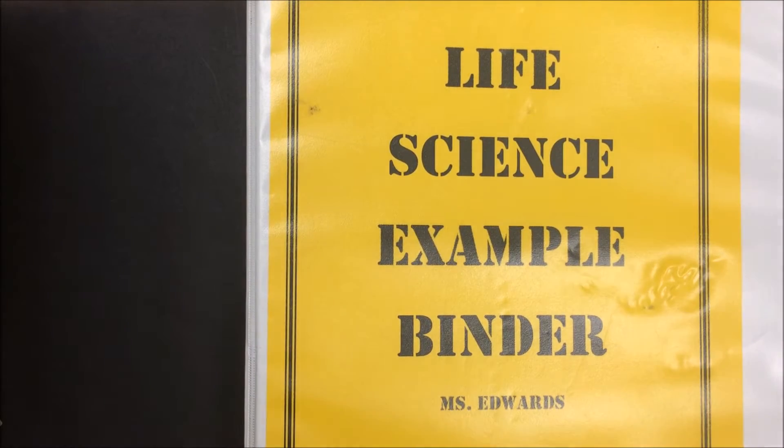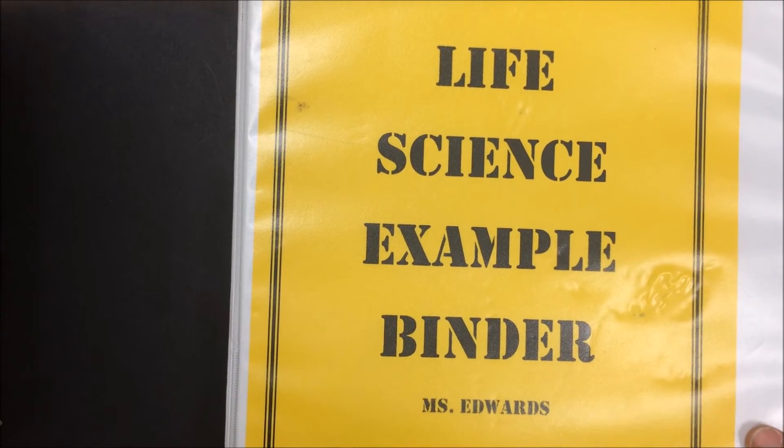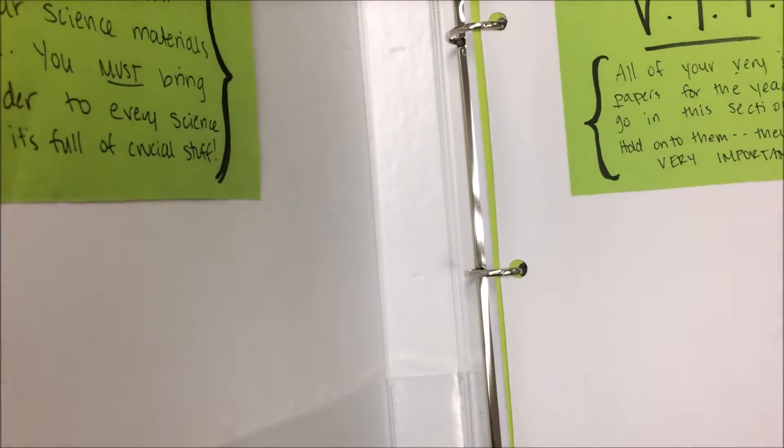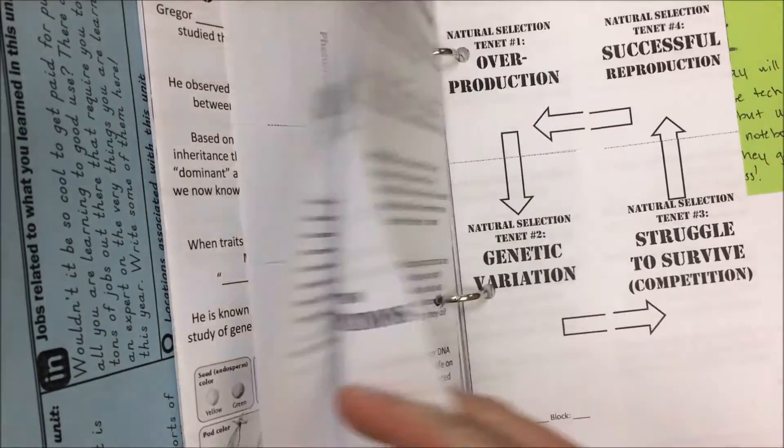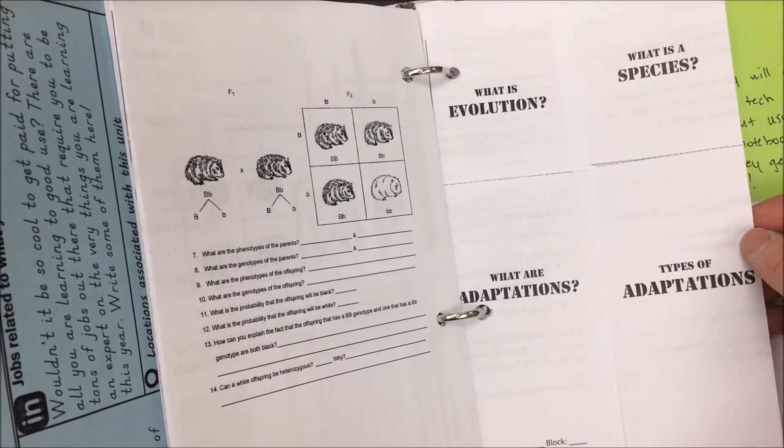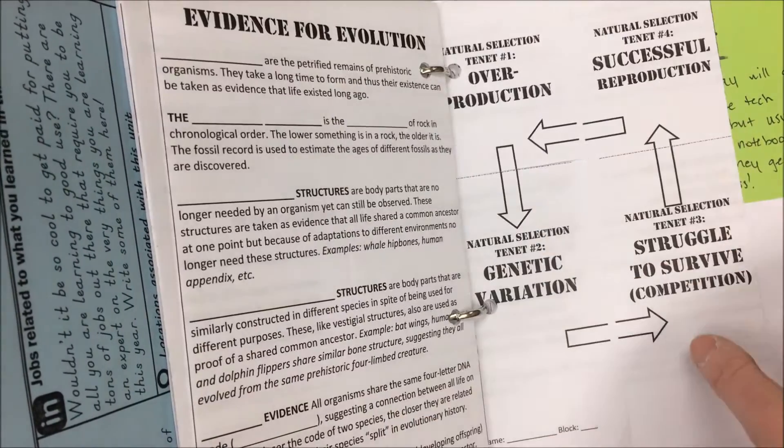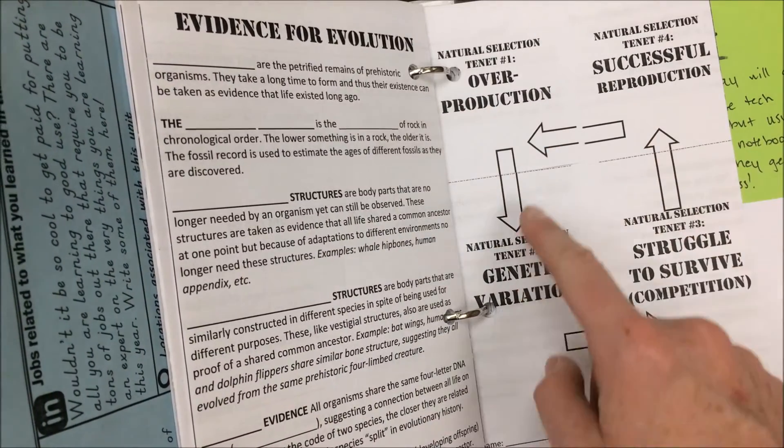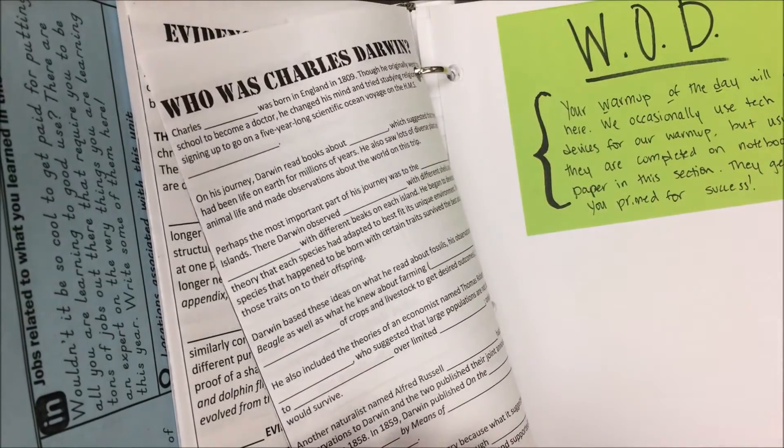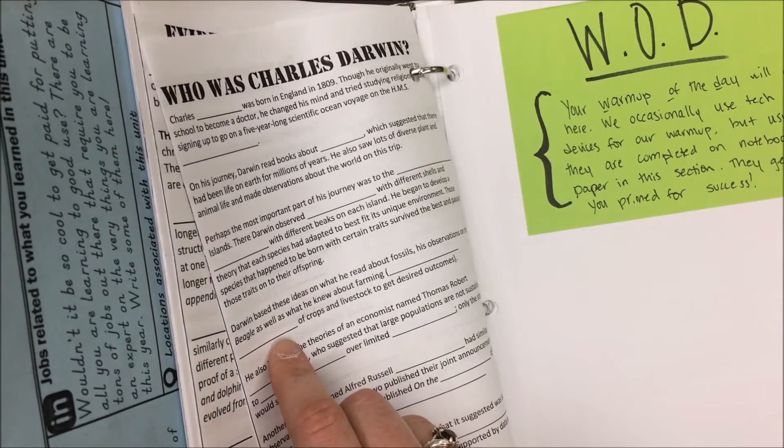Alright folks, let's talk about what we need to study for our unit test on evolution and natural selection. In your VIP section we have two foldables: the first one was an introduction to evolution and adaptations, and the second one shows the four steps of the theory of natural selection as well as biographical information about Charles Darwin.